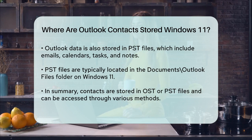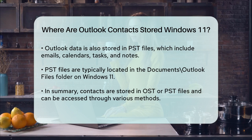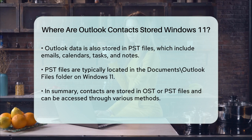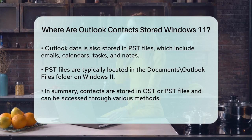To summarize, your Outlook contacts on Windows 11 are stored in either the OST file if you're using an Exchange account, or in the PST file if you're not. You can access these contacts through the People app, the web version of Outlook, or by locating the PST or OST files directly on your computer.